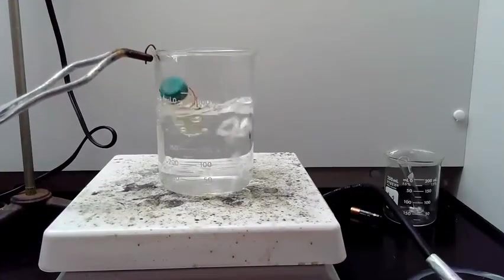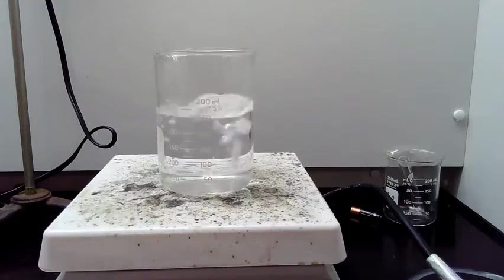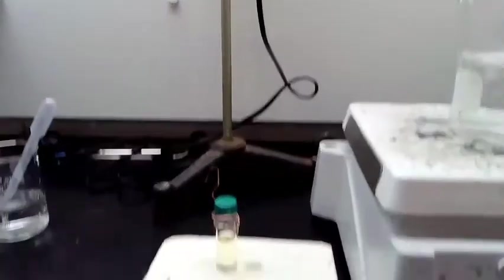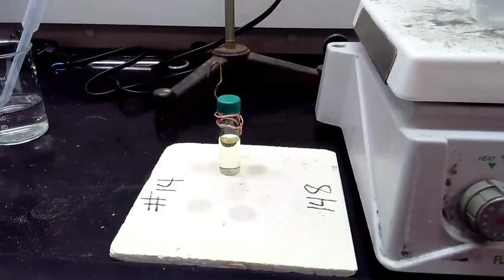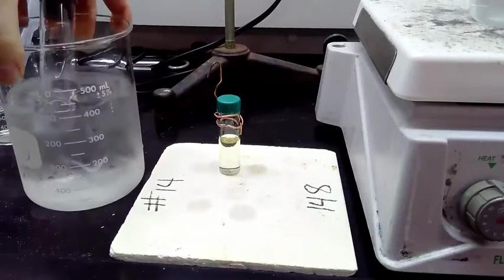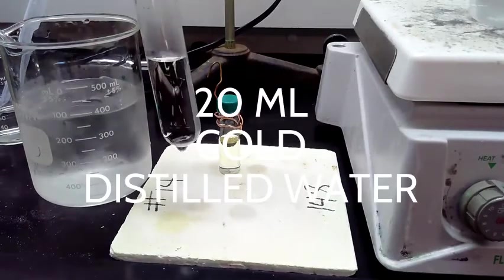Now we need to take the vial out, so we're going to use a crucible tong and put it off to the side. The camera will pan over there in a second for you to see it. We want to leave the vial out for about a minute or so. It's mostly so that you can touch it because you're going to dispense that into your ice water.